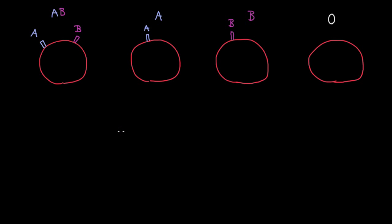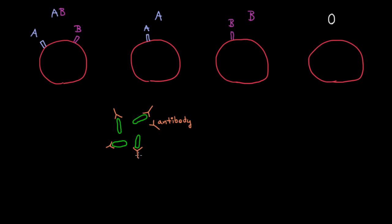If you get a bacterial infection, one of the ways that your body is going to fight it is to attack it with antibodies. What an antibody does is it attaches to bacteria and basically marks them for destruction, or actually destroys them itself. When I say marks them for destruction, I mean that another white blood cell in your body will see the antibody attached to this thing and will know that it needs to kill it. So these antibodies are a really important part of our immune system and our defense against infections.